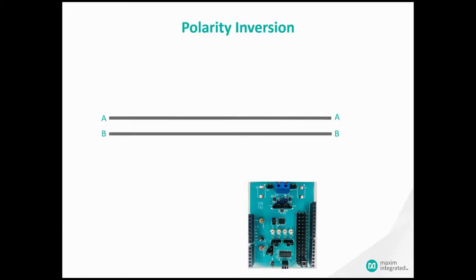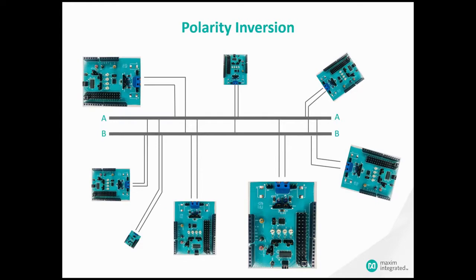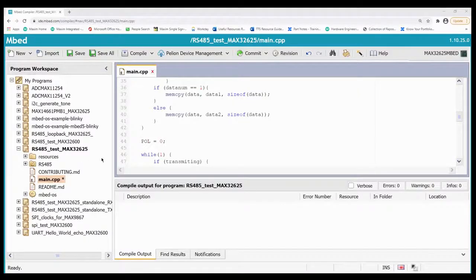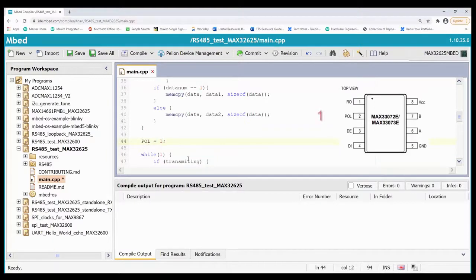Now consider a situation where the A and B pins have been miswired. Perhaps during installation someone wired one or more transceivers' A-pin to the B data line and B-pin to the A data line. In a large and complex system with many transceivers, perhaps in hard to reach places, this becomes more of a problem. Instead of spending time and money to rewire everything, you can simply change one value in your microcontroller code. The POLE pin of the MAX 33072E can be set logic high to invert the polarity of the A and B pins.